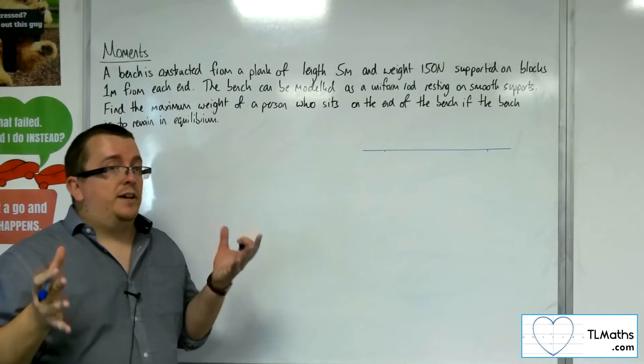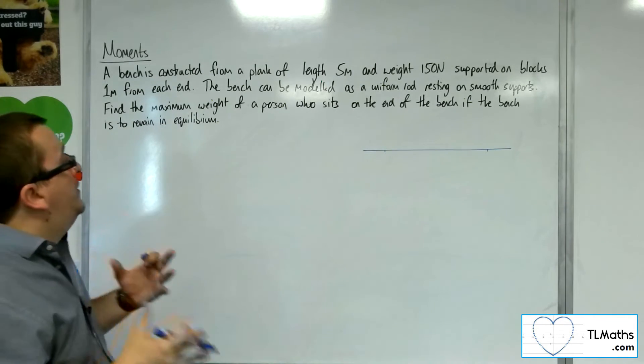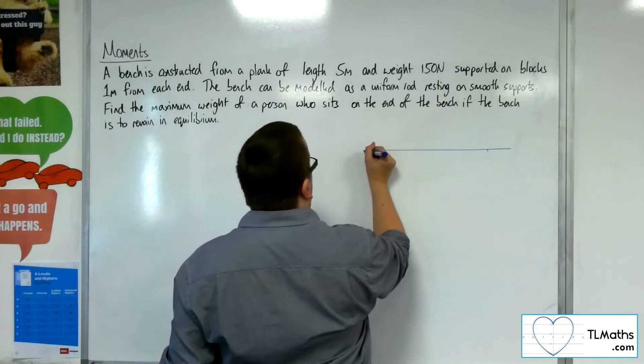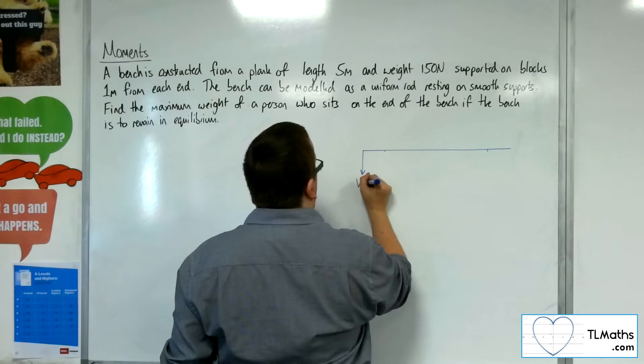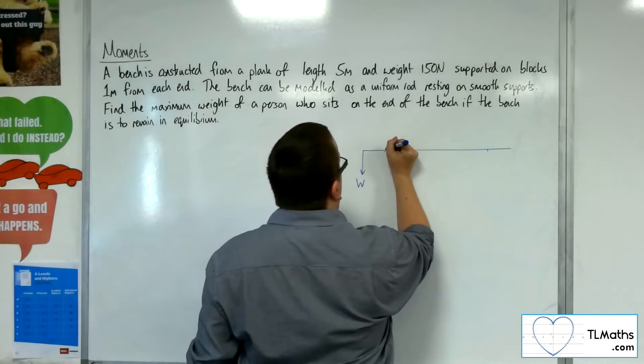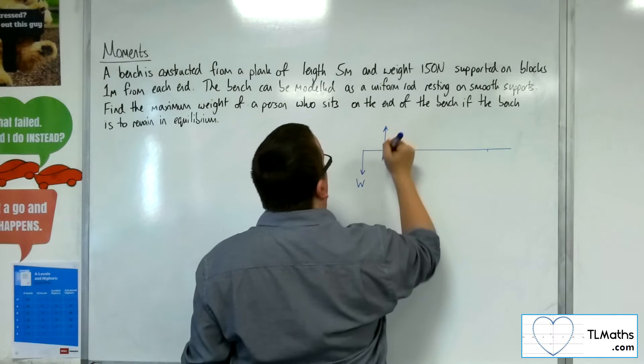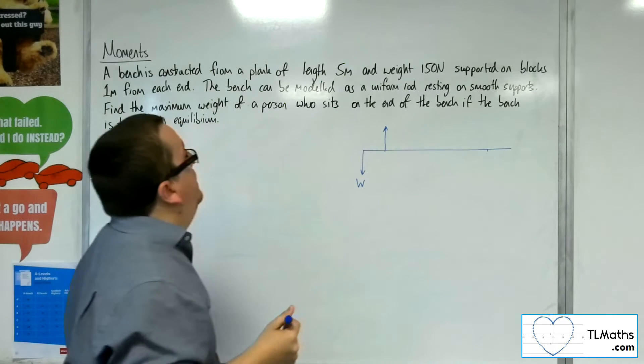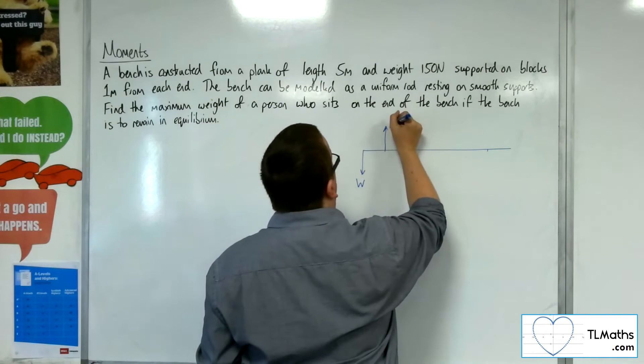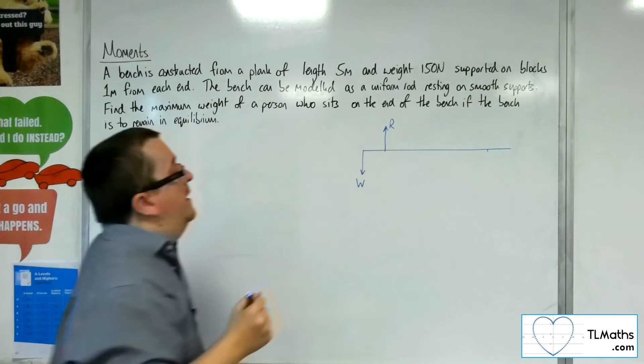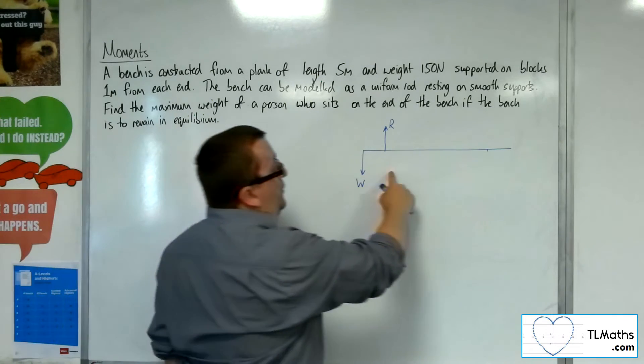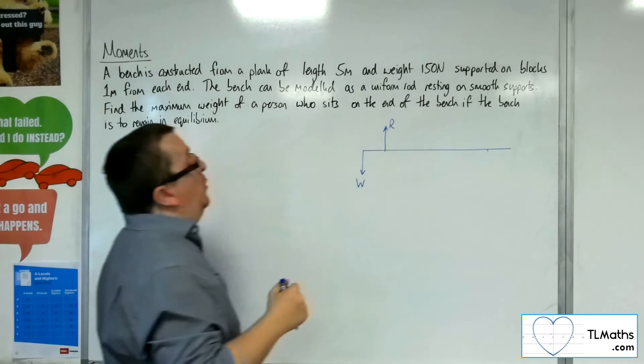Now, for my diagram, I'm going to draw it so the person who's sitting on the end of the bench is here. So there's going to be a weight working downwards. That means that the reaction force will only be going around that point there. So the reaction force is there at R. Now, that means the reaction force over here at the other support will be zero.